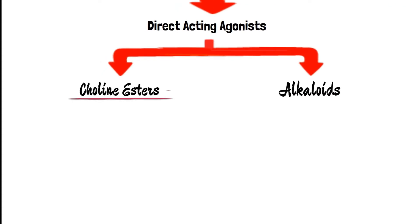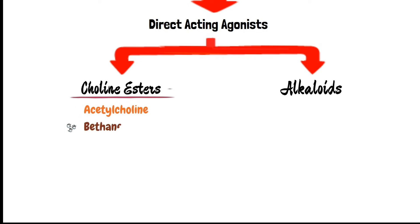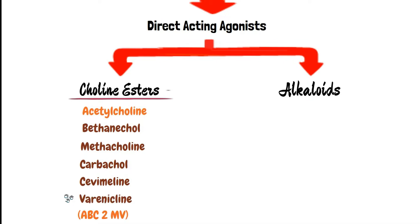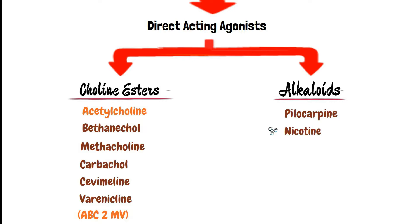Choline esters of the direct acting agonists include acetylcholine itself and other drugs like bethanechol, methacholine, carbachol, cevimeline, and varenicline. While on the other hand, the alkaloids include pilocarpine, nicotine, and muscarine — clinically important agents.